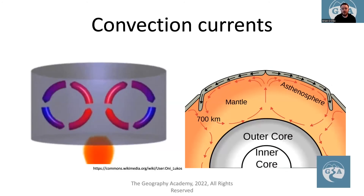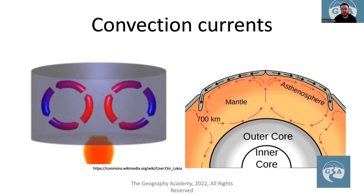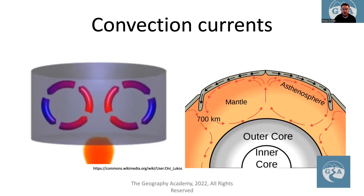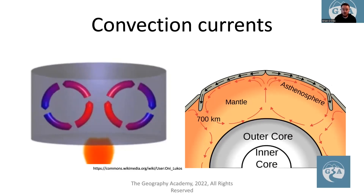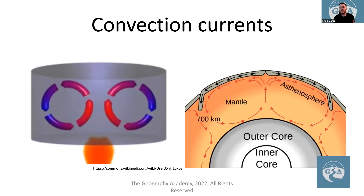Another key process is convection currents. Heat from the mantle causes magma to rise, and when it reaches the top, it moves sideways in either direction, driving the convection currents. As the magma moves and cools, it becomes more dense and sinks back toward the core, where it heats up and the cycle repeats. When answering any question about tectonic plates, convection currents are generally the starting point of the explanation.